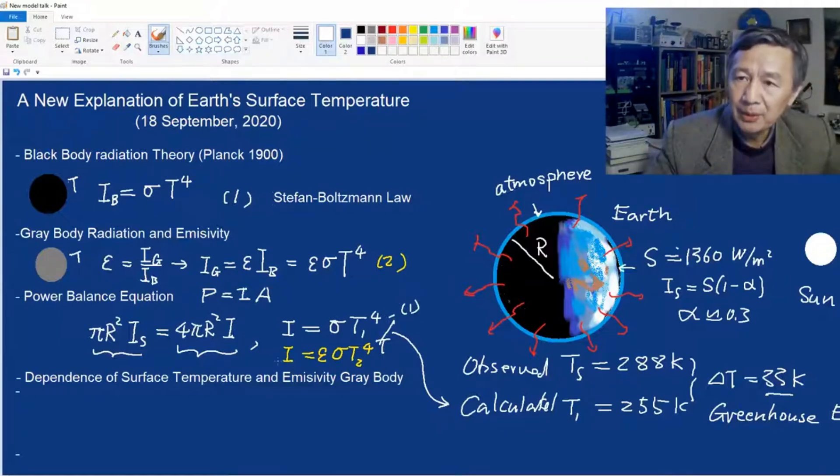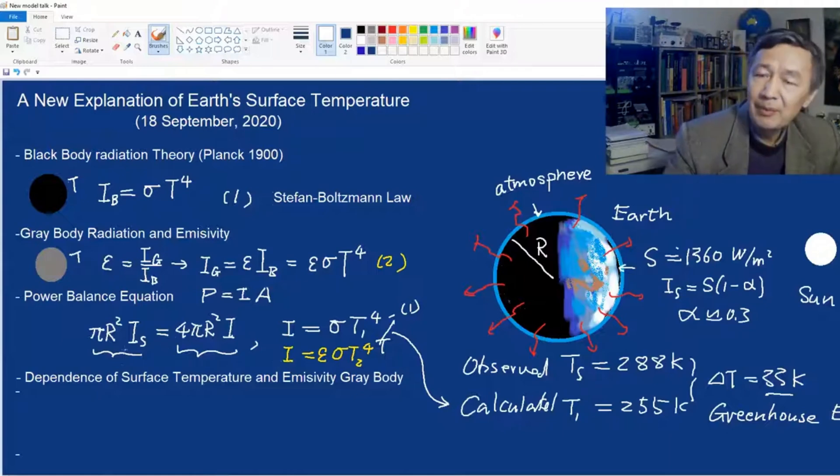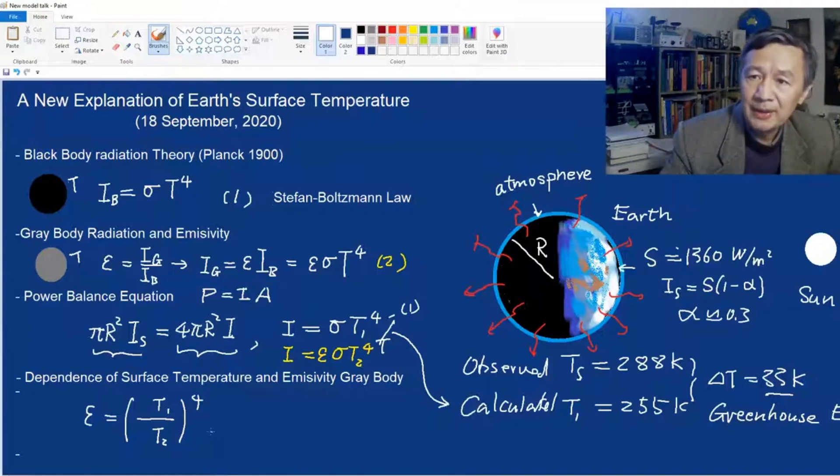So the difference is, other people treat the Earth as a black body, but I treat the Earth as a gray body. By doing some simple math, we can obtain the formula for epsilon, which can be written as the ratio of two values, T₁ and T₂ to the power of 4. T₁ is obtained by treating Earth as a black body, and T₂ is theoretically predicted by treating Earth as a gray body.